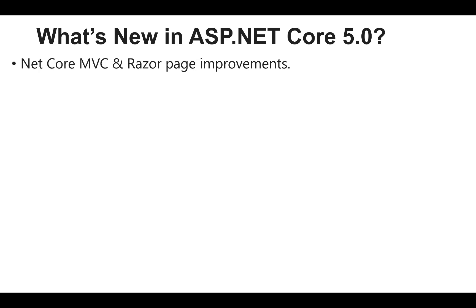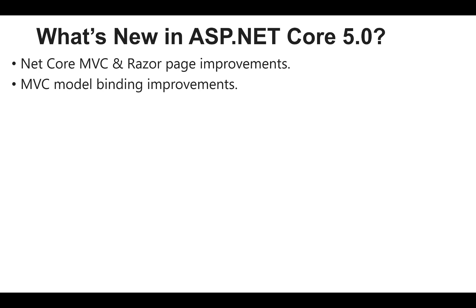The first feature in ASP.NET Core 5.0 is .NET Core MVC and Razor page improvements. In the Razor page improvements, you can see all these things discussed one by one in later videos. Today I am going to show you only the basic building blocks of features of ASP.NET Core 5.0. The second feature is MVC model binding improvements, like using records and C# 9 features.